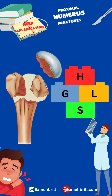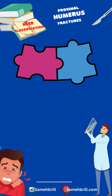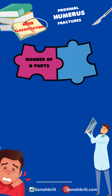The four parts are the humeral head, the greater tuberosity, the lesser tuberosity, and the humeral shaft. The two main components of this classification are the number of fracture parts and the displacement.